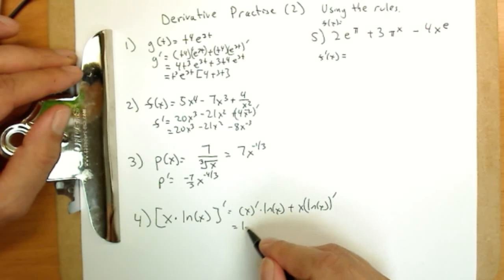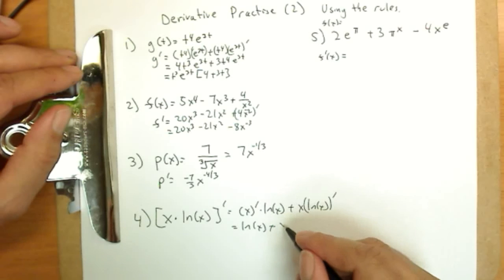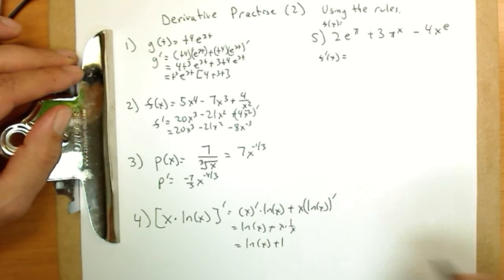Derivative of x is one, so I have natural log of x. Derivative of natural log of x is one over x. So plus x times one over x, which is simply one. ln of x plus one.